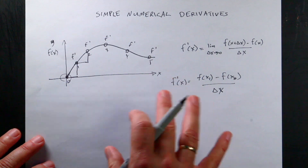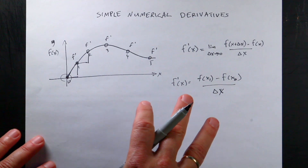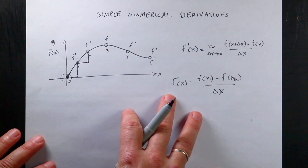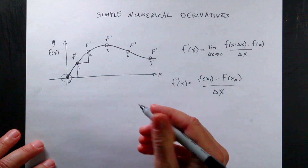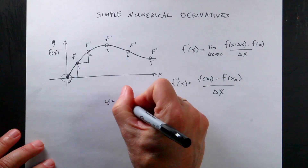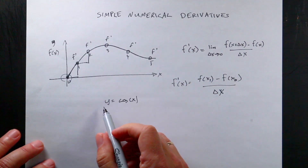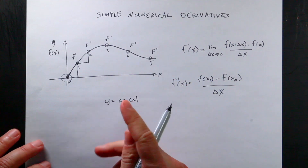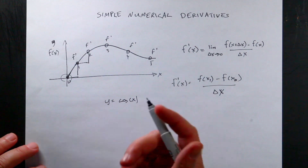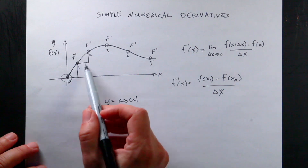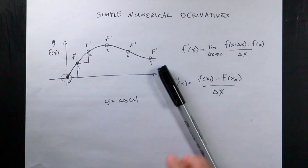What I want to do — you could do this with actual real data, but I'm going to generate the data using a function so we can check and see if it works. I'm going to plot y equals cosine of x, then take the derivative of that. I am assuming that my delta x's are all the same, although they don't have to be. In real data, that may not be the case.